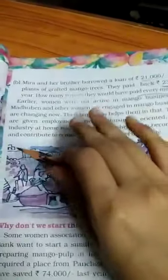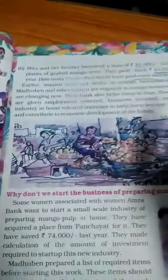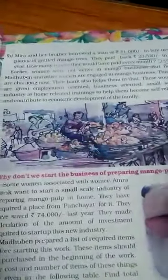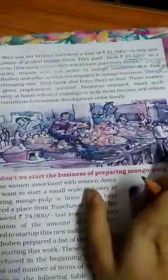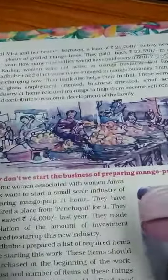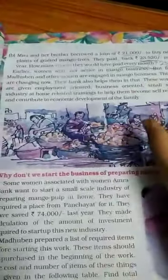What is given in this paragraph? Earlier, women were not active in the mango business. But now, women are also engaged. Their bank also helps them, giving employment-oriented, business-oriented, and industry-oriented help and training.